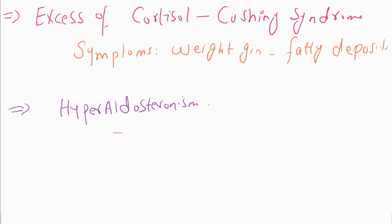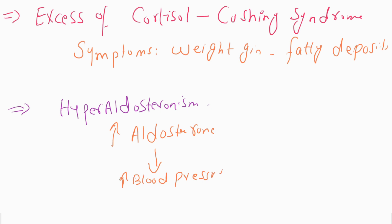Another condition is hyperaldosteronism, in which the hormone aldosterone is overproduced. Due to high production of aldosterone, it results in high blood pressure and low potassium levels in the bloodstream. The symptoms of hyperaldosteronism include weakness and spasms.